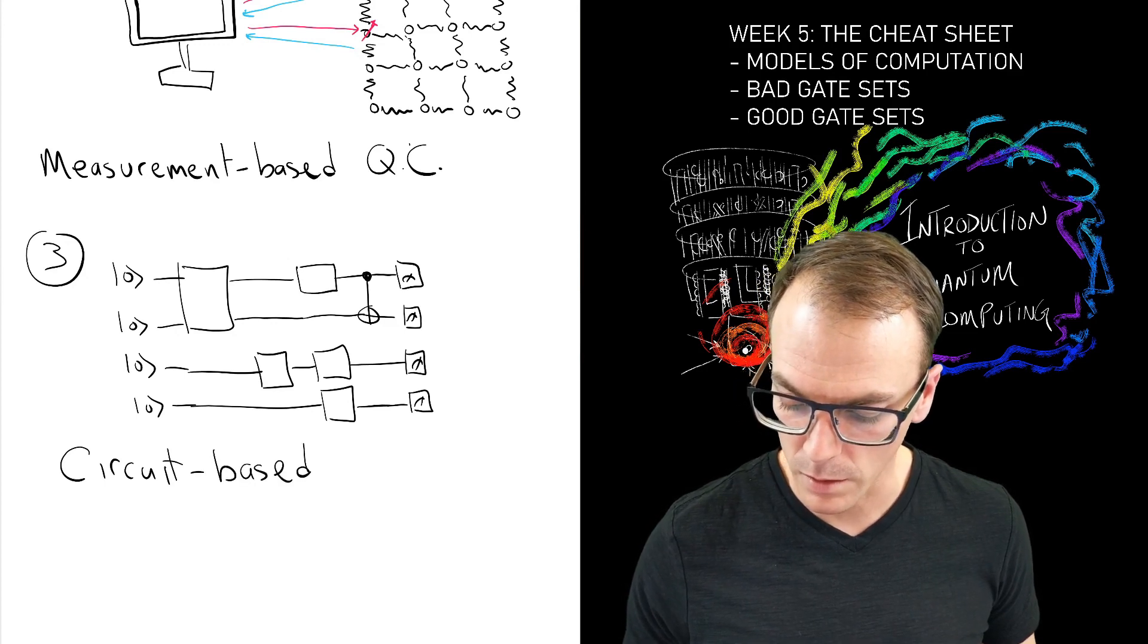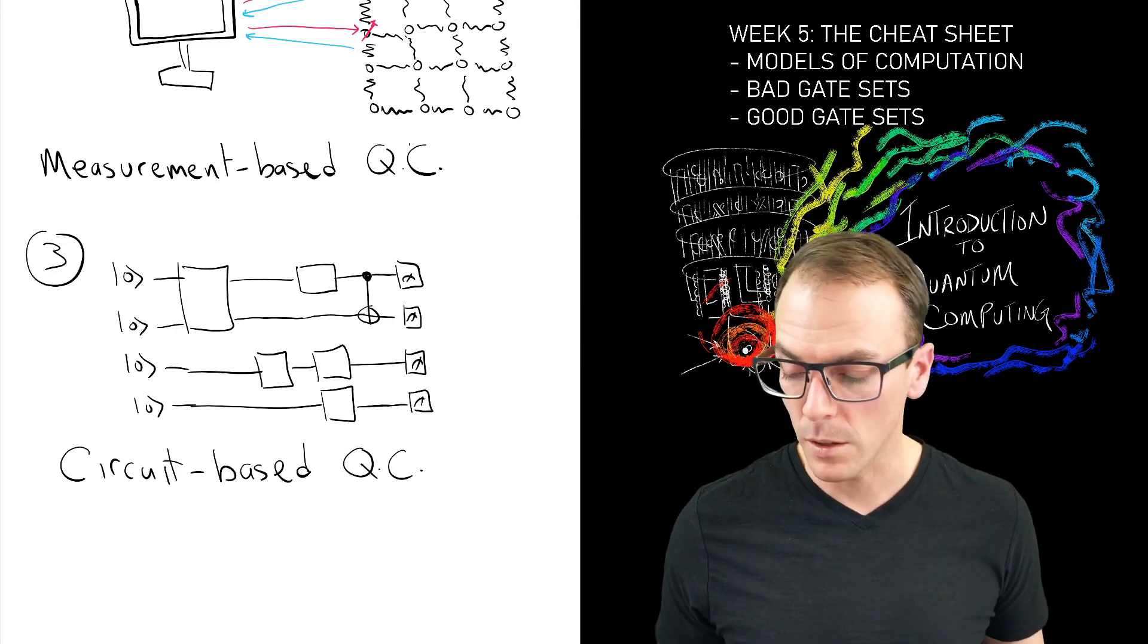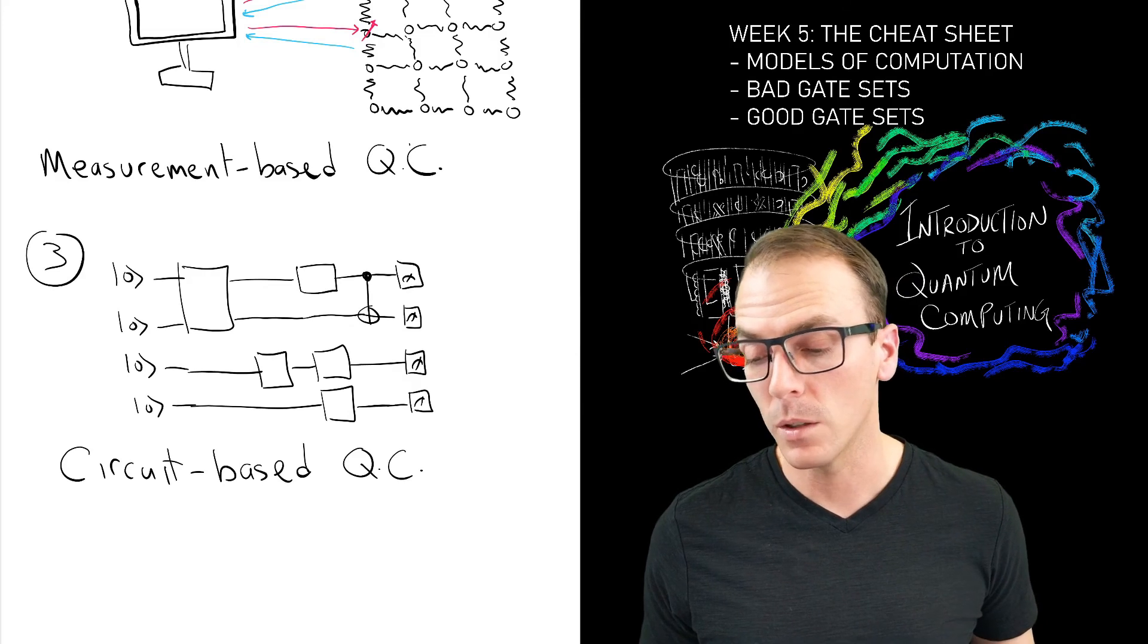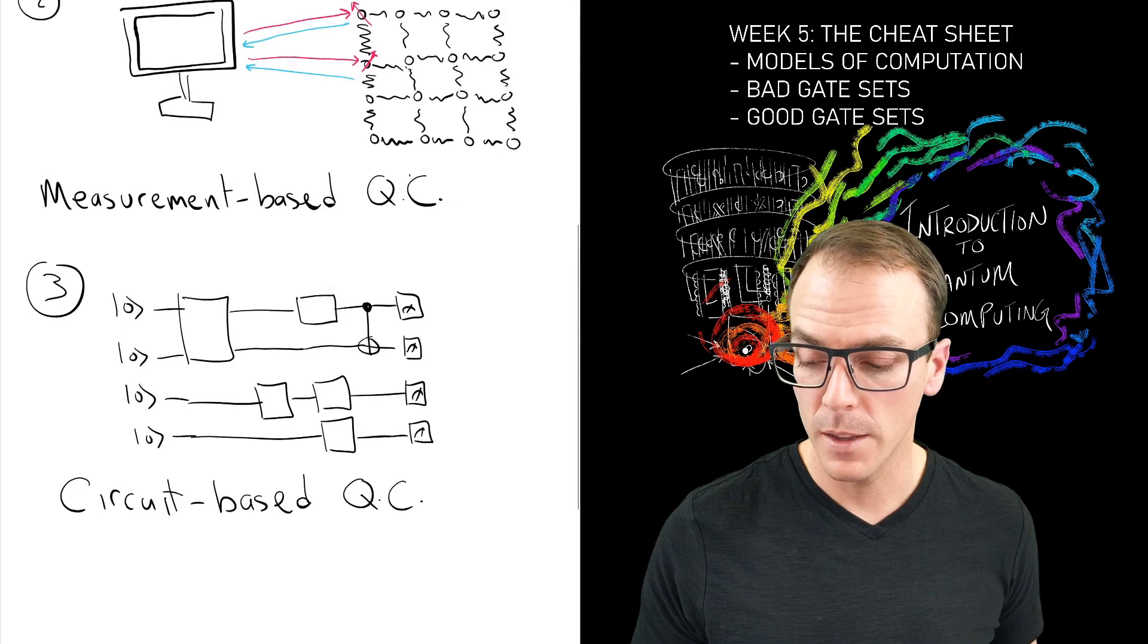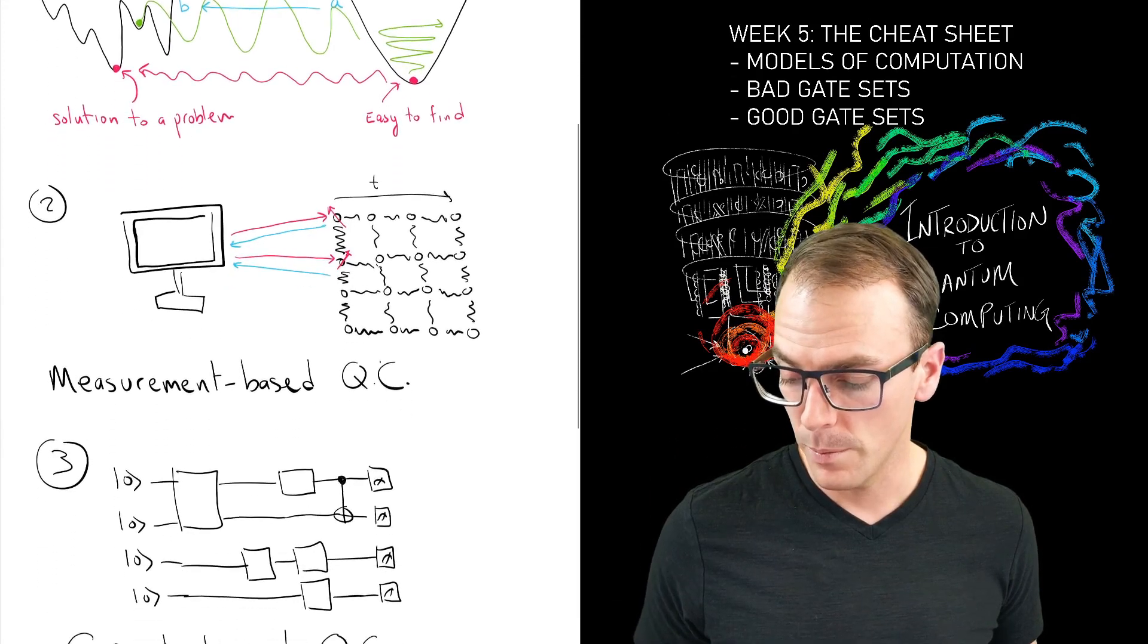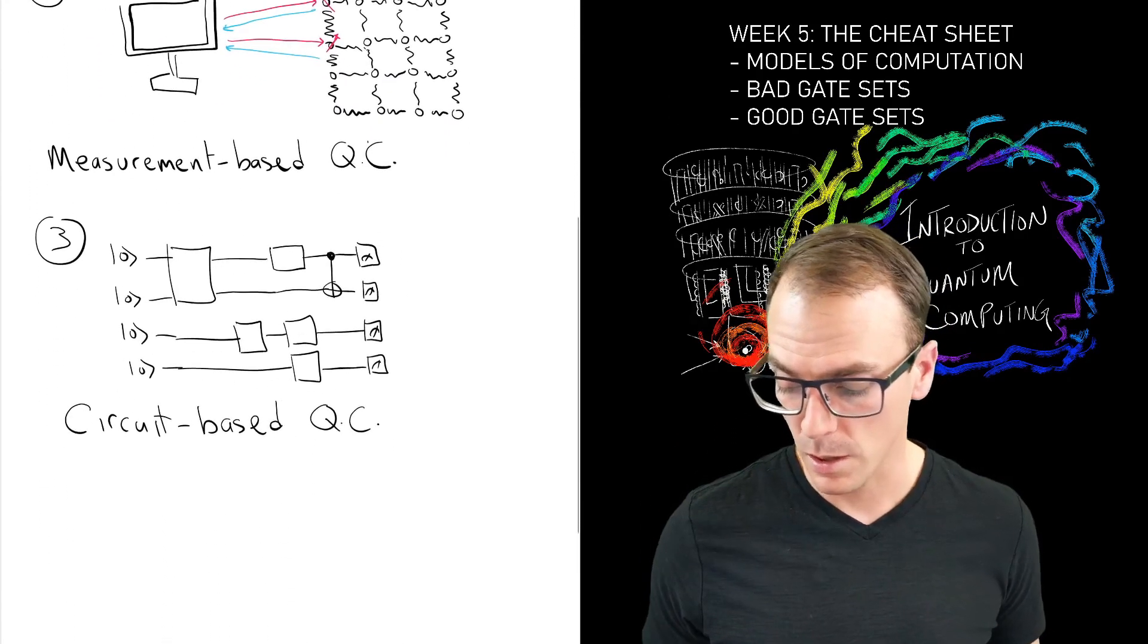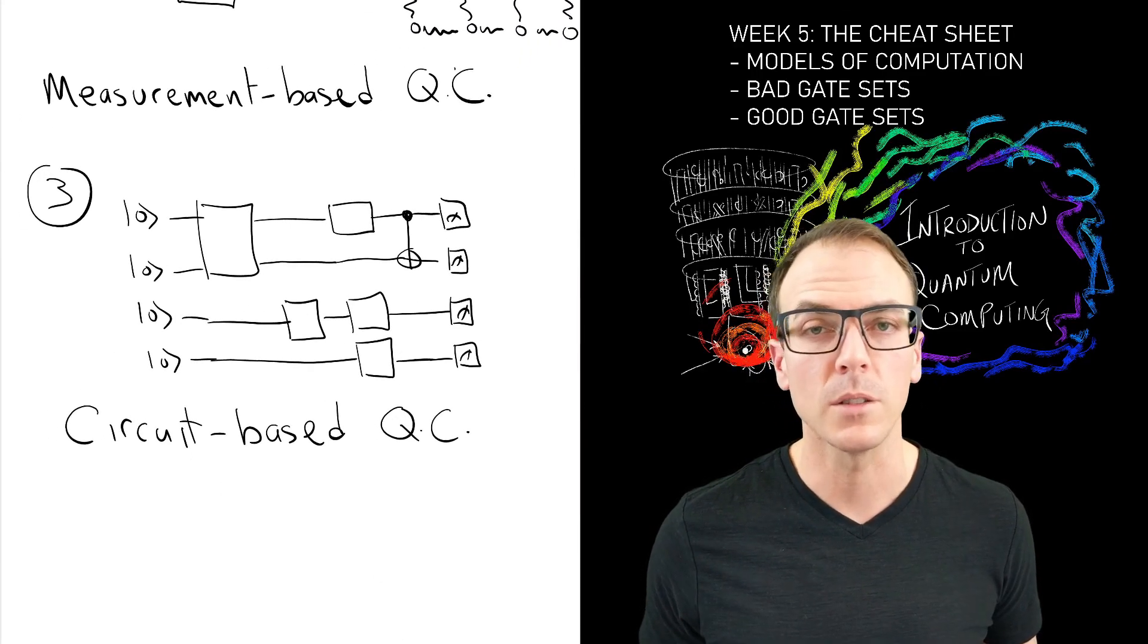So this is the circuit-based model of quantum computation, and this is by far the most common model and the one that we've used so far and the one that we'll continue to use in this subject. But you should be aware that there are other models of quantum computation and more beyond what I've shown here, but you might say that these three are the most common, and the circuit-based model is certainly the most common one that you'll see.